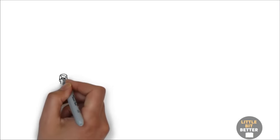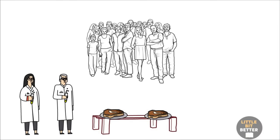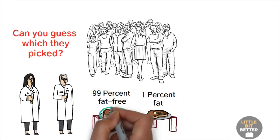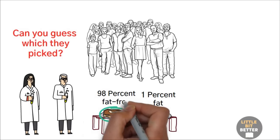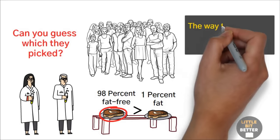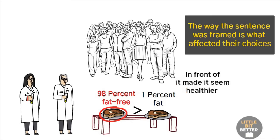Here's an experiment that will help you understand it better. Researchers presented a group of people with two kinds of meat and asked them to choose which was healthier. A. 99% fat-free or B. 1% fat. Can you guess which they picked? Respondents ranked the first type of meat, A, as healthier, even though they were both identical. Even more interesting, when they had to choose between A. 98% fat-free and B. 1% fat, again, most respondents chose the first option, even though it has a higher fat content. The way the sentence was framed is what affected their choices. Saying fat-free with a big number 99 or 98 in front of it made it seem healthier than focusing on the fat content.